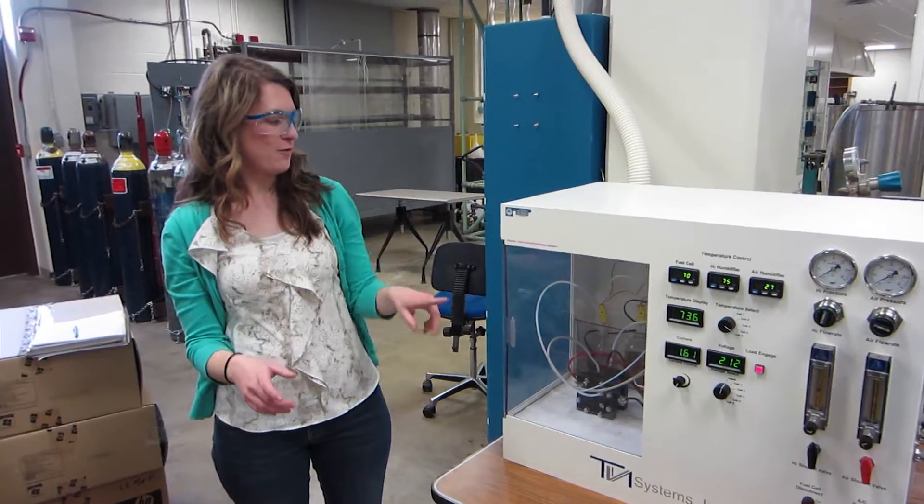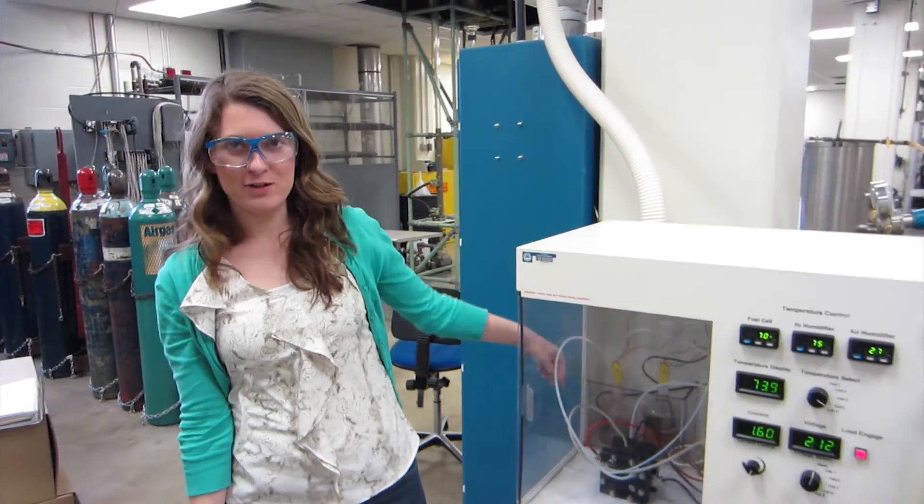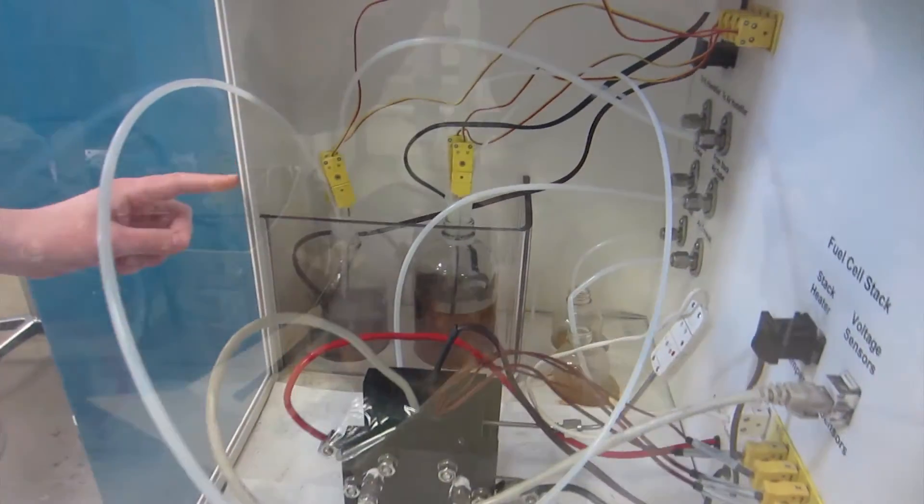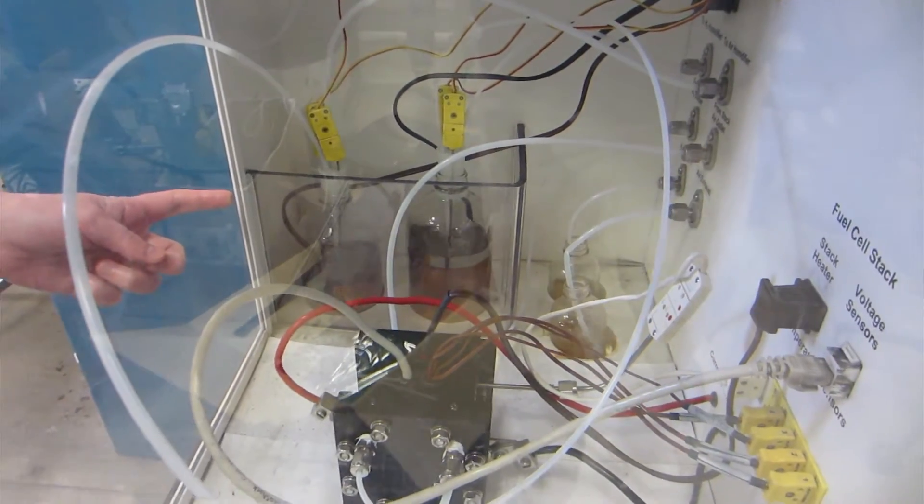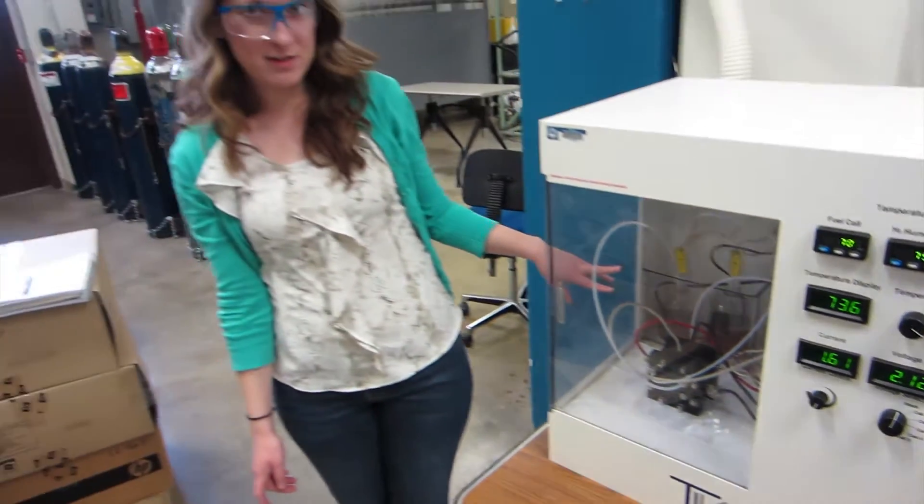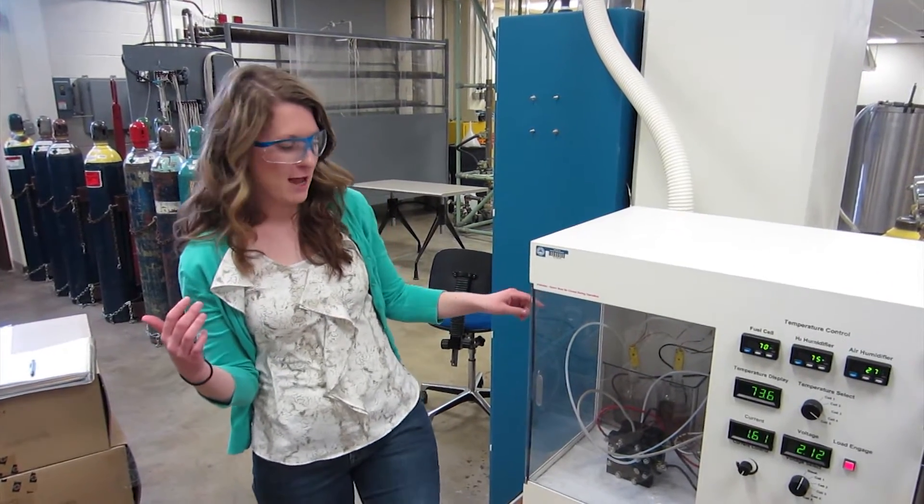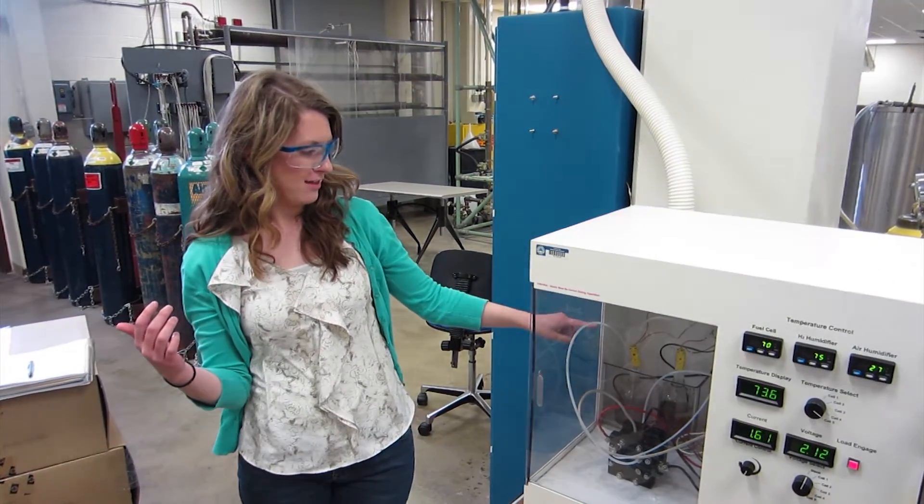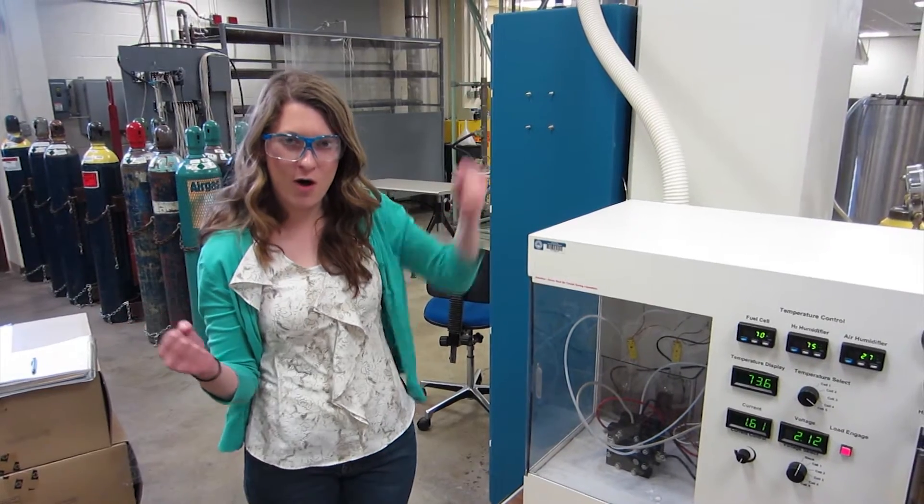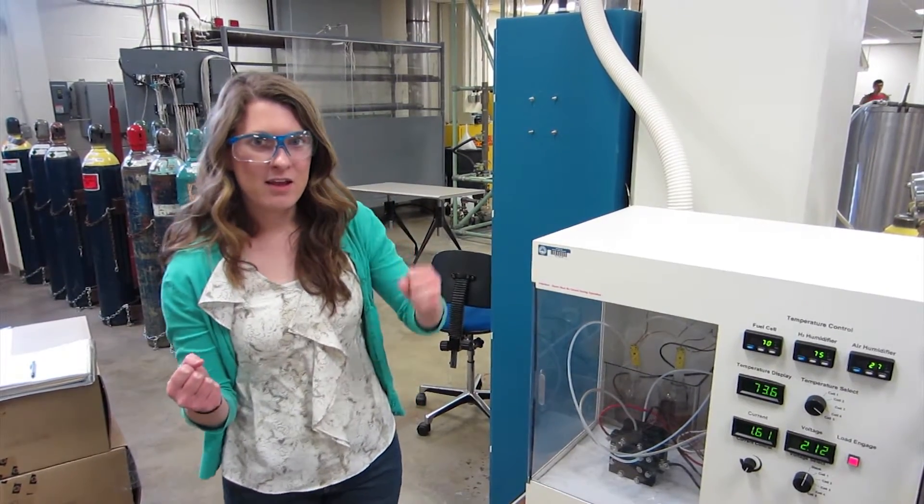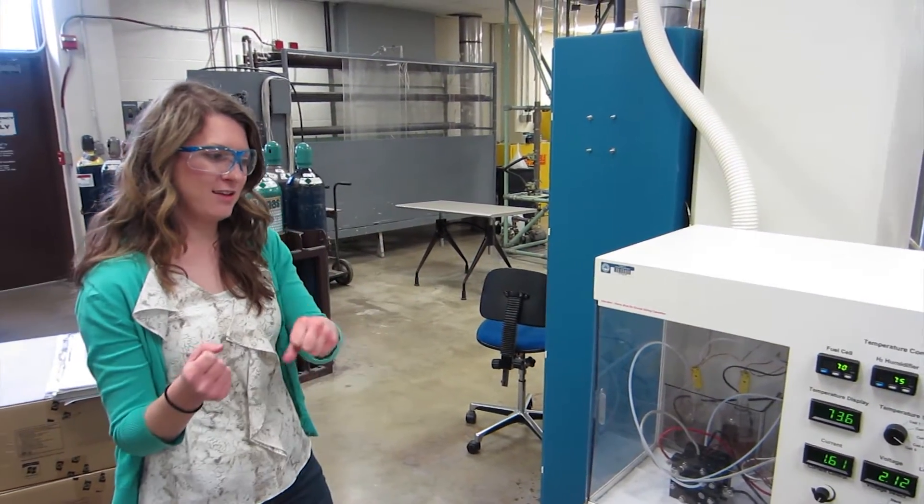So first thing you're going to do is these two things back here. You're going to make sure they're full of water and if the two little bottles don't have water or if they're full of water you need to empty them. You need to make sure that the thermistors go all the way in there and put them down as tightly as you can.